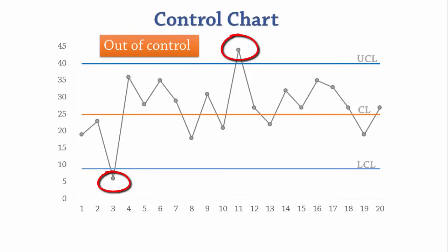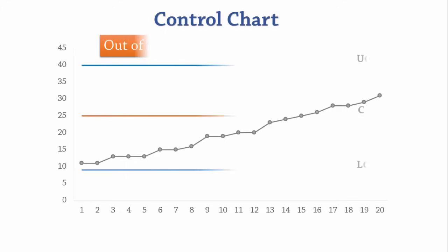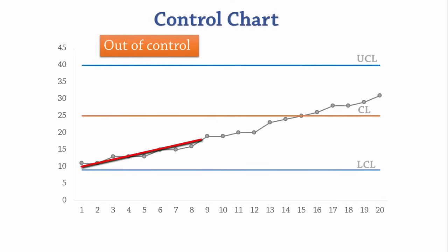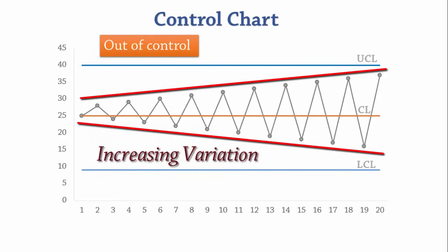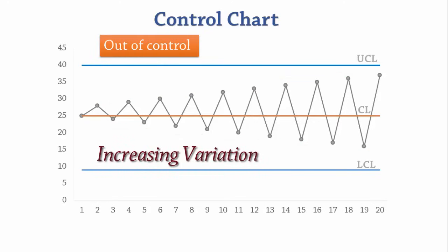Here is another process out of control as there is a positive trend in the process values. This process here will also be considered out of control because of increasing variation between the values over time.